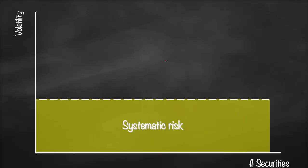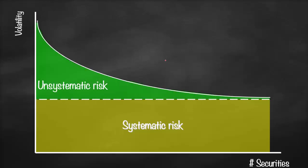The bottom part of the graph represents systematic risk — the risk that cannot be avoided. An empirical study shows that with around 30 securities that are weakly or negatively correlated, unsystematic risk decreases as we add more securities to our portfolio. This is why we can avoid unsystematic risk but cannot avoid systematic risk.